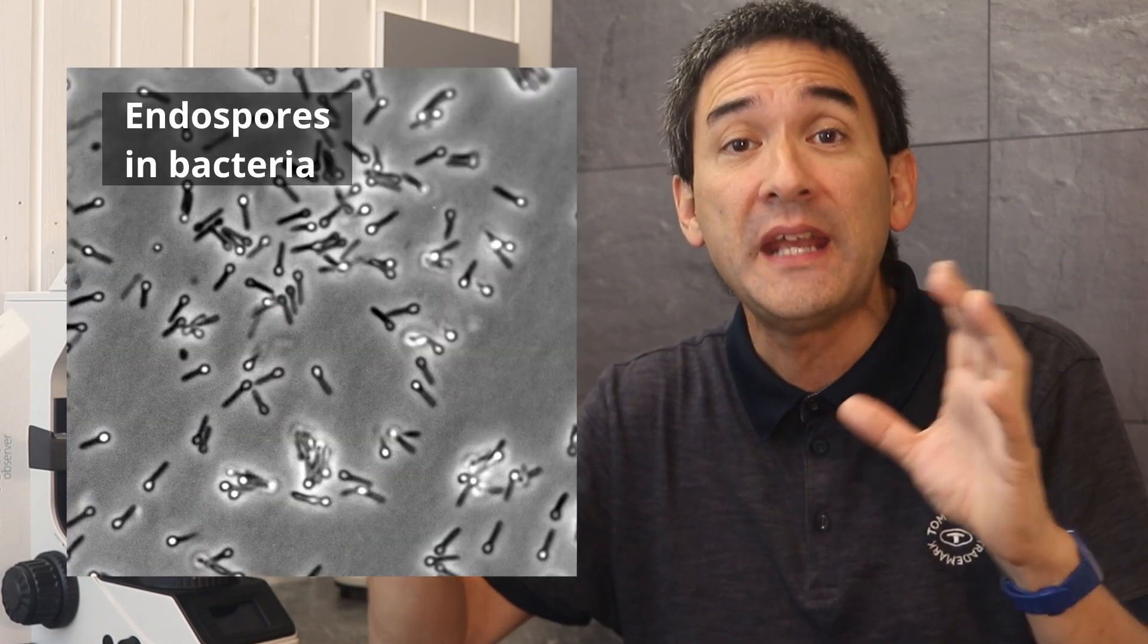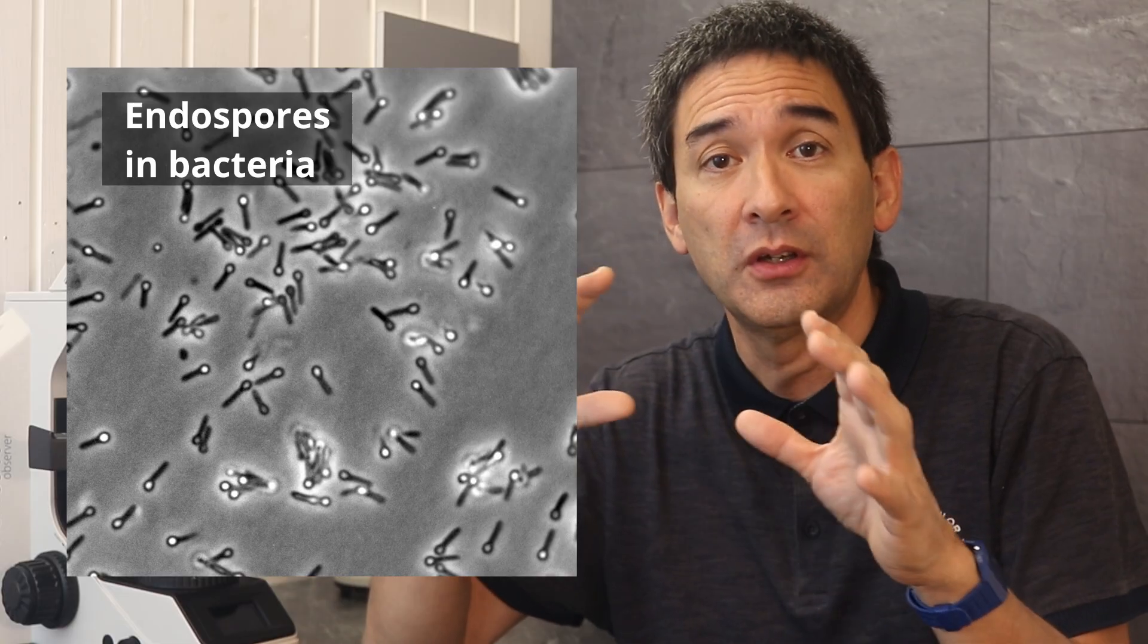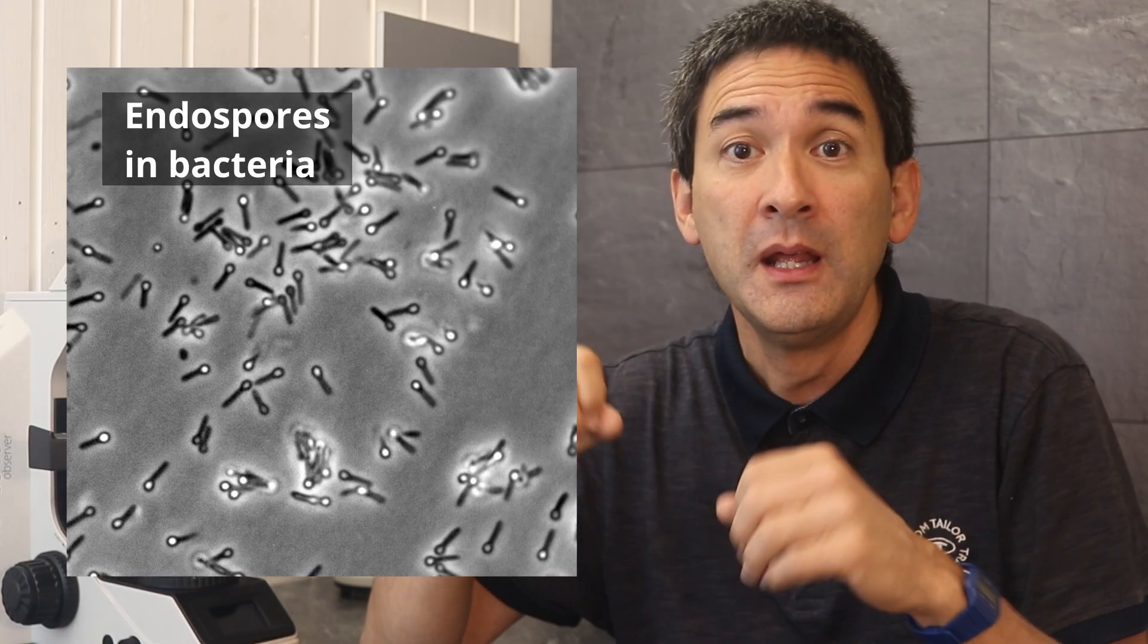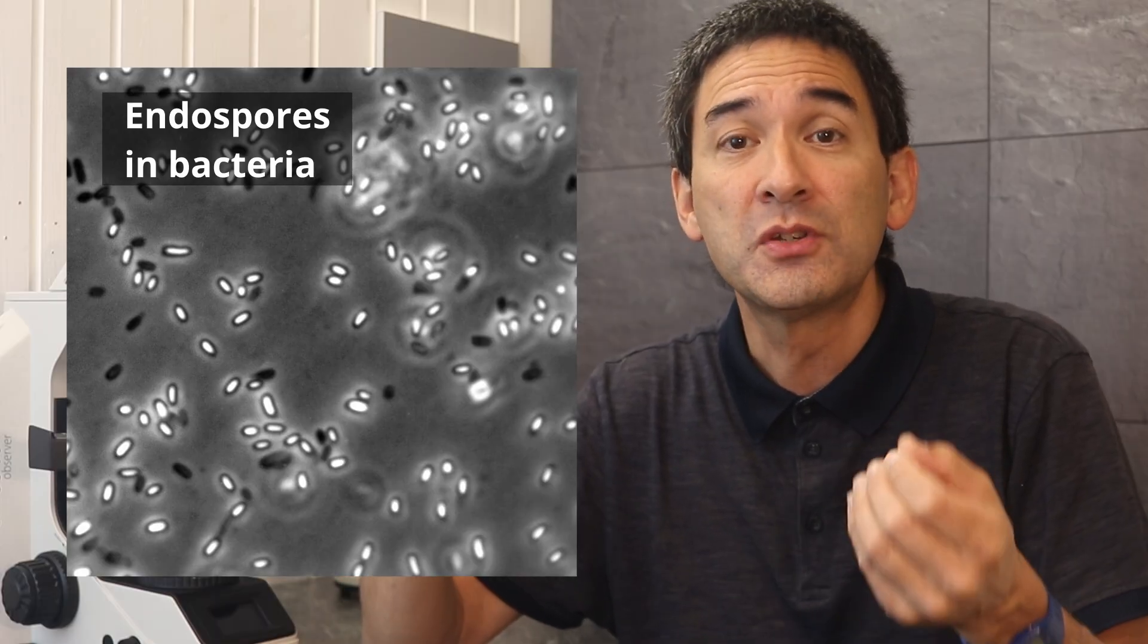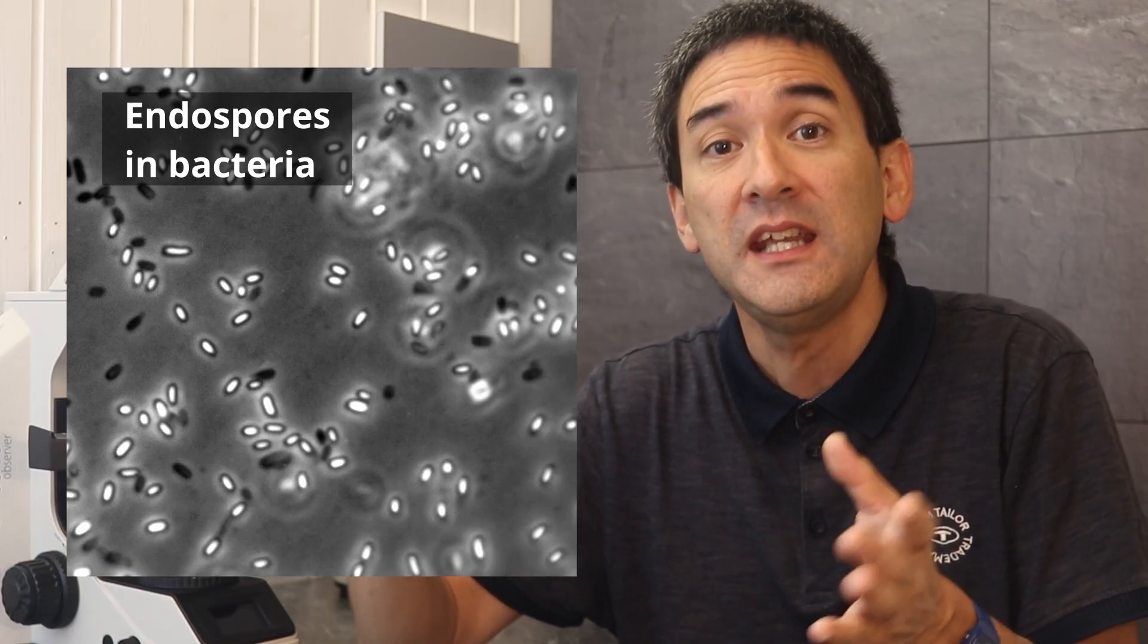Some bacteria can form spores that look quite different from the viable form. But in its original sense, pleomorphism meant that organisms could transform into entirely different species. That's not possible because the DNA stays the same. A dog cannot become a cat, bacteria cannot become fungi, and fungi cannot convert back to bacteria.